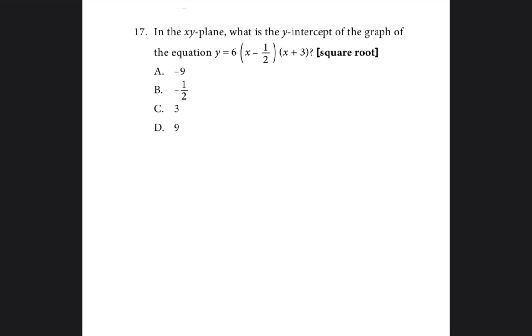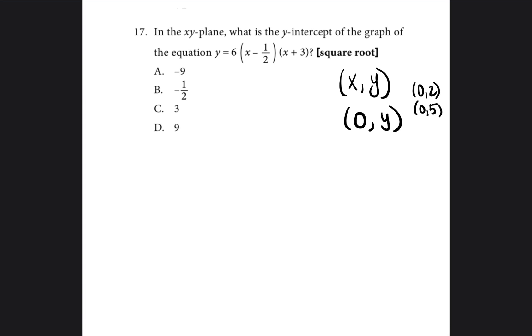Problem 17 says: in the xy-plane, what is the y-intercept of the graph of the equation y equals 6 times (x minus 1/2) times (x plus 3)? It's always good to remember that the y-intercept is just a point on the graph that goes through the y-axis. That point is always written with zero as the x-value — for example, (0, 2) or (0, 5) — where the second number is the y-intercept.